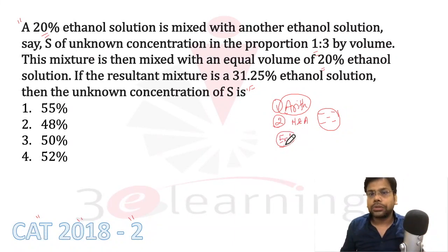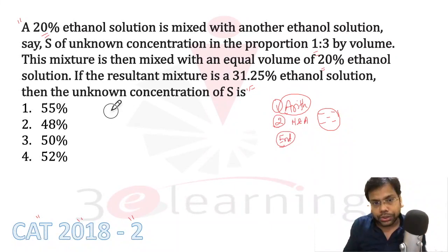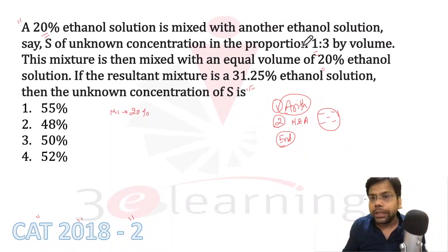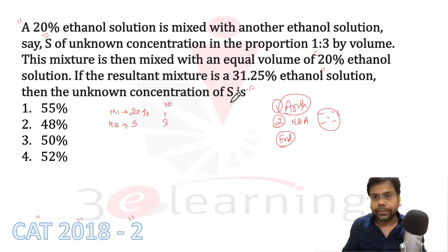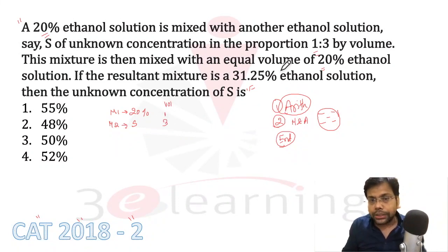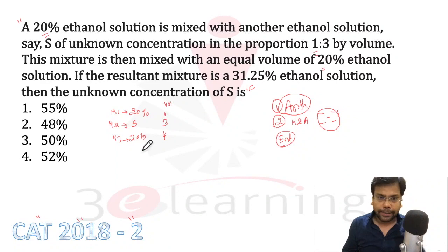Let me tell you how I will solve this question. A 20% ethanol solution — meaning mixture 1 has 20% ethanol. This is mixed with another ethanol solution whose concentration is S%. The volume ratio is 1 is to 3. This 1:3 mixture is then mixed with an equal volume — meaning a 4-litre mixture is mixed with 3 parts that has 20% ethanol.